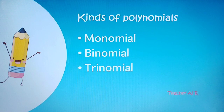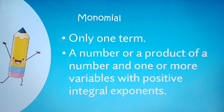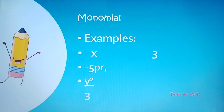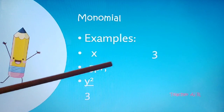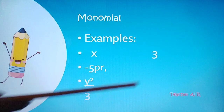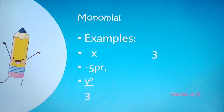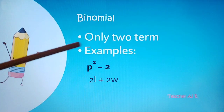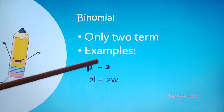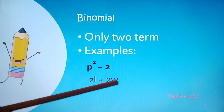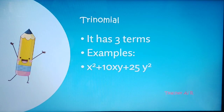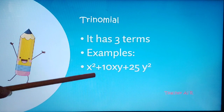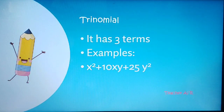So we have the kinds of polynomials: monomial, binomial, and trinomial. A monomial has only one term — it is a number or a product of a number and one or more variables with positive integral exponents. Examples are X, negative 5R, Y squared, and 3. A binomial has two terms, such as P squared minus 2. A trinomial has three terms, such as X squared plus 5XY plus 25Y squared.